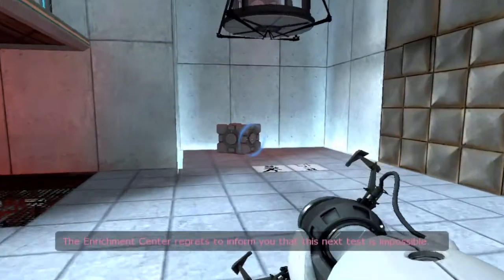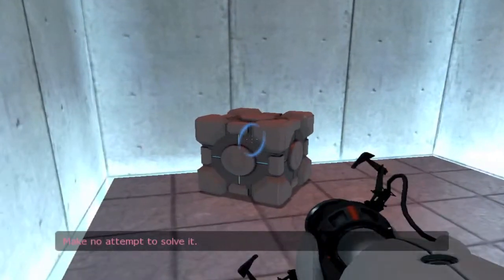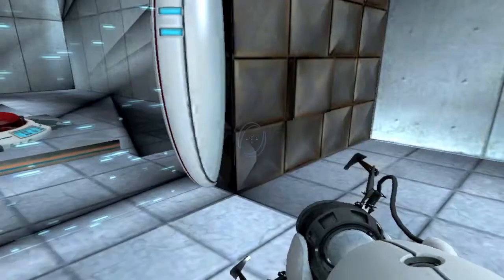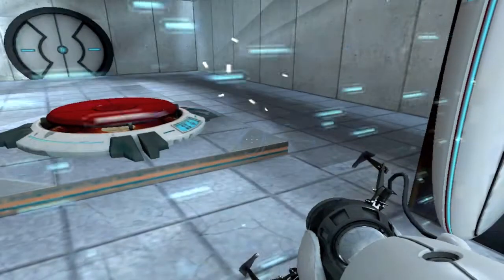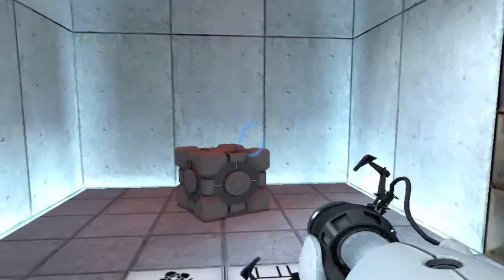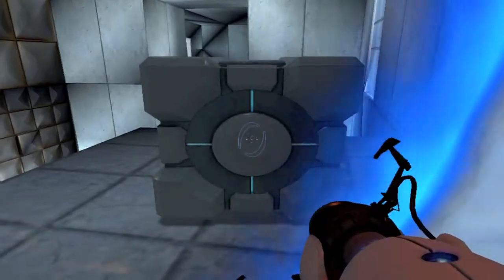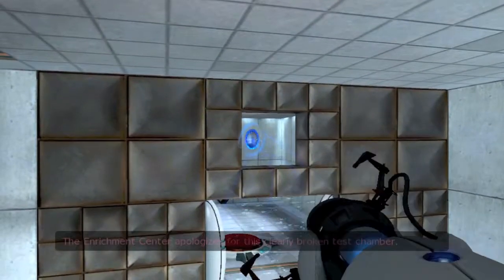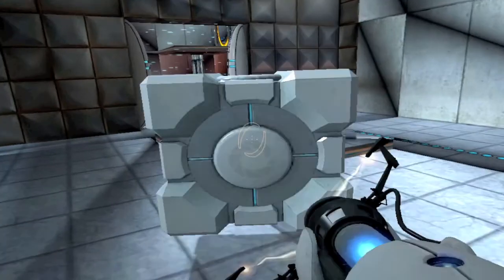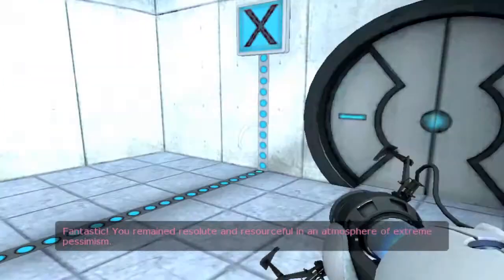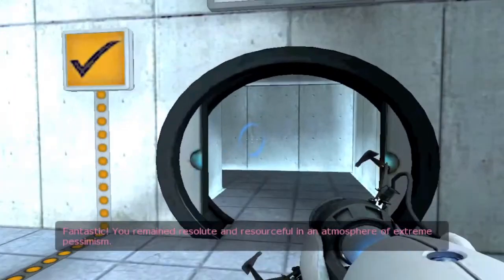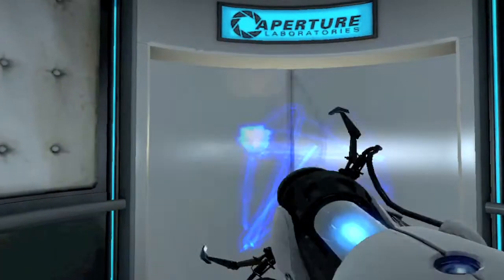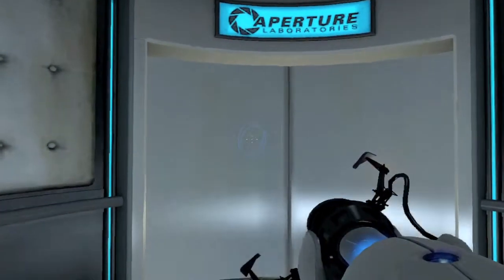The Enrichment Center regrets to inform you that this next test is impossible. Wait, no attempt to solve it. I'm going to—she's going to get pissed when I do, isn't she? Can I put the cube through here? Nope, I knew I couldn't, little bitch. There's gotta be something. The Enrichment Center apologizes for this clearly broken test chamber. It ain't impossible baby, because I just did it. You remain resolute and resourceful in an atmosphere of extreme pessimism. If there is no sound you guys can still read the subtitles. I know I talk over them a lot, so I'm sorry. Maybe I won't. It's up to you guys, leave the comments below.